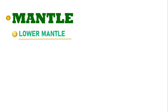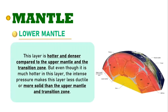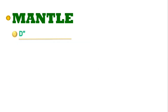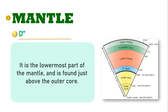Beneath the transition zone is the lower mantle. This layer is hotter and denser compared to the upper mantle and the transition zone. But even though it is much hotter in this layer, the intense pressure makes this layer less ductile or more solid than the upper mantle and transition zone. And beneath the lower mantle is the D double prime layer, the lowermost part of the mantle, found just above the outer core.